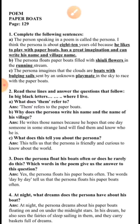Next: the persona floats paper boats filled with shiuli flowers in the running stream — we have already studied this in the poem. Next: the persona imagines that the clouds are boats with bulging sails sent by an unknown playmate in the sky to race with the paper boats — he is not aware who the playmate is, but someone is there to race with the paper boats.